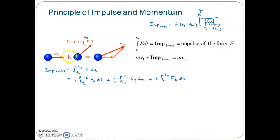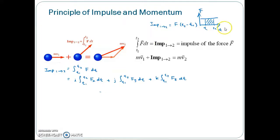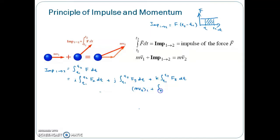To recap: when a particle is acted upon by a force F during a given time interval, the final momentum MV2 can be obtained by adding vectorially the initial momentum MV1 and the impulse of force F during the time interval T1 to T2. We note that while kinetic energies and work are scalar quantities, the momenta and impulses here are vector quantities.